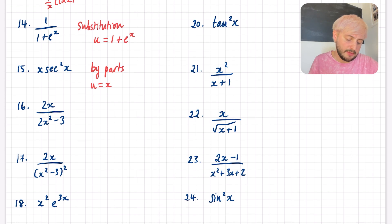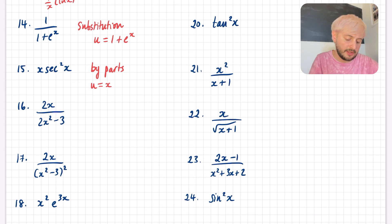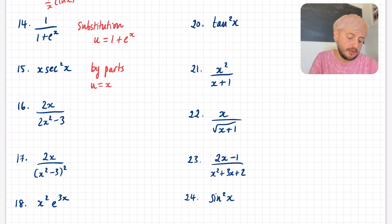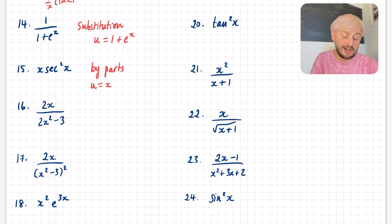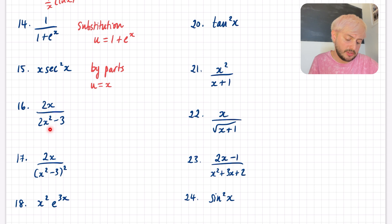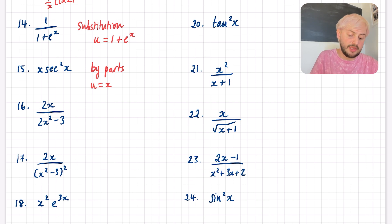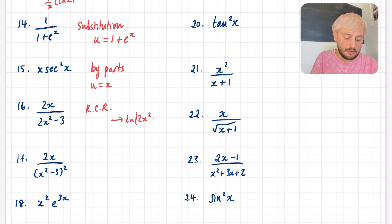Question 16: let's go through that list. It's not a standard result. We want to see if it's a reverse chain rule. The question we ask is: is the numerator related to the derivative of the denominator? The denominator here would differentiate to 4x, and the numerator is related to it — it's just scaled. So this one is a reverse chain rule, and it's going to lead to something like ln(2x² − 3). Anything where the denominator differentiates to the numerator is going to go to a ln.